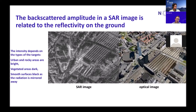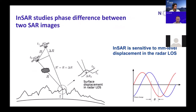In areas with vegetation you will usually have low energy return to the satellite. Water areas typically also have very little energy reflected back, because water acts like a mirror, particularly when there is no wind. InSAR stands for SAR interferometry, and interferometry comes from the word interference. Basically it involves looking at the phase difference between two SAR images.